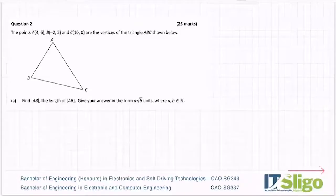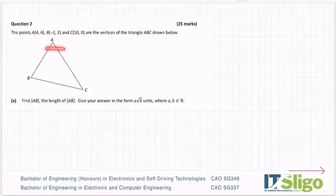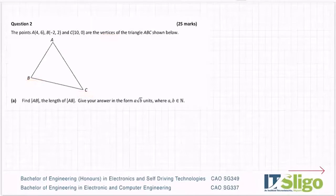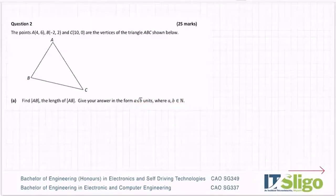Question 2 on the 2020 Paper 2. The points A(4,6), B(-2,2) and C(-10,0) are the vertices or corners of the triangle ABC shown below. Find AB, the length of AB — those two lines are maths language for the length of. Give your answer in the form A root B units where A and B are elements of N.